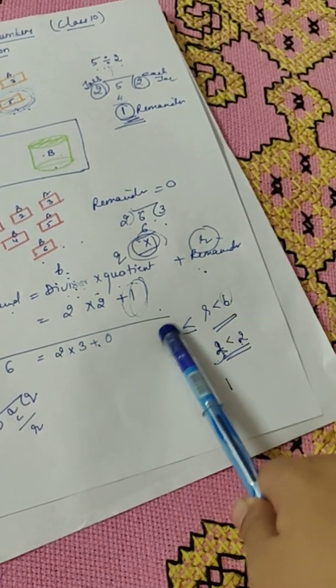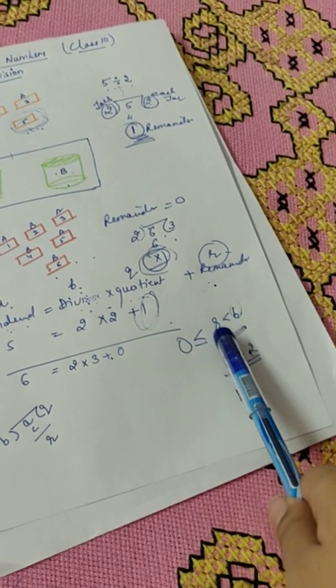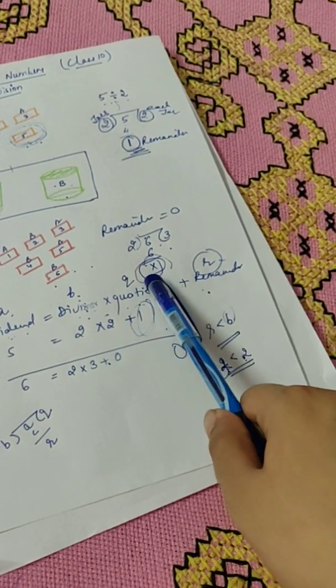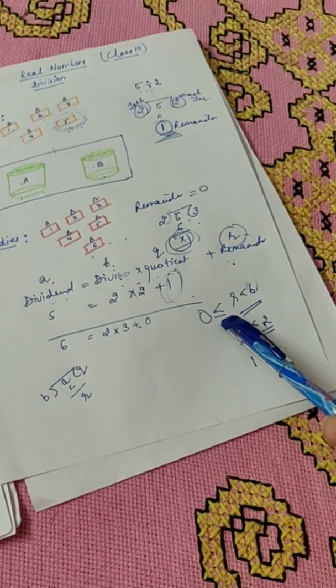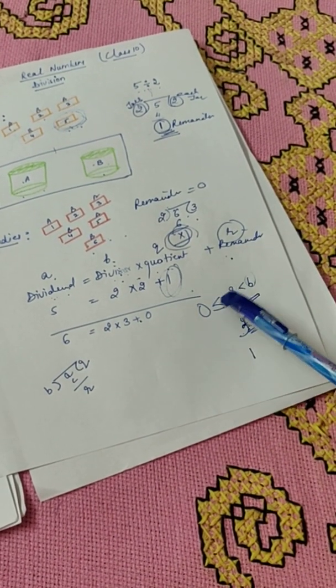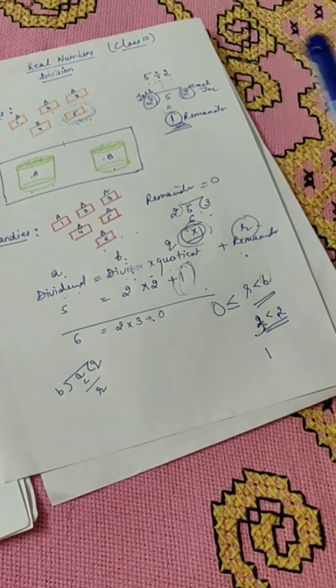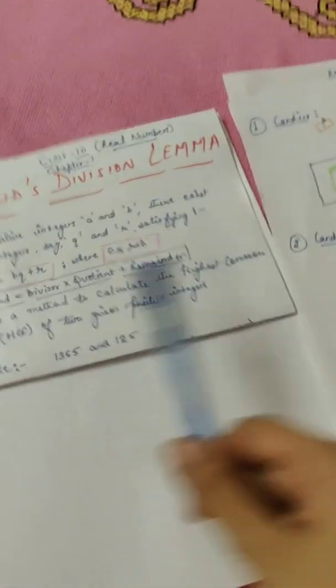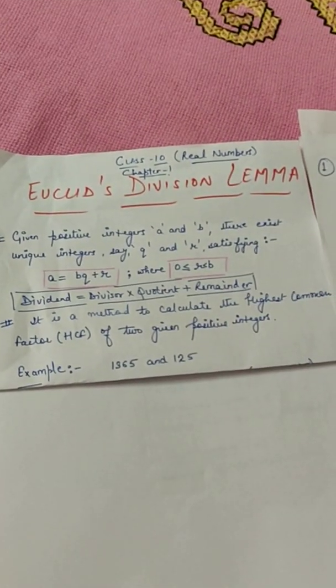And obviously, it cannot be a negative number. So this is always greater than zero. And it can be equal to zero if it is fully divided. Therefore, the condition that the remainder always lies between zero and B, and it can be equal to zero as well.